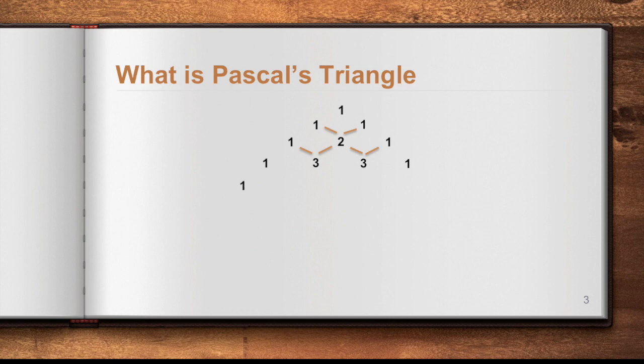The next row will give you 1 at both ends, and then 1 plus 3 is 4, 3 plus 3 is 6, then 3 plus 1 is 4, and of course 1 at the other end. Looking at this pattern, you can determine the numbers for the next row.